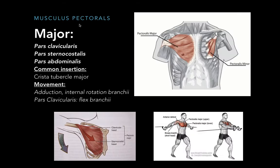The musculus pectoralis major consists of three parts corresponding to where they originate. Pars clavicularis originates at the clavicula, pars sternocostalis originates at the sternum and the cartilage of the ribs number 2 to 4, and pars abdominalis originates at the abdominal muscle called musculus recti abdominalis.